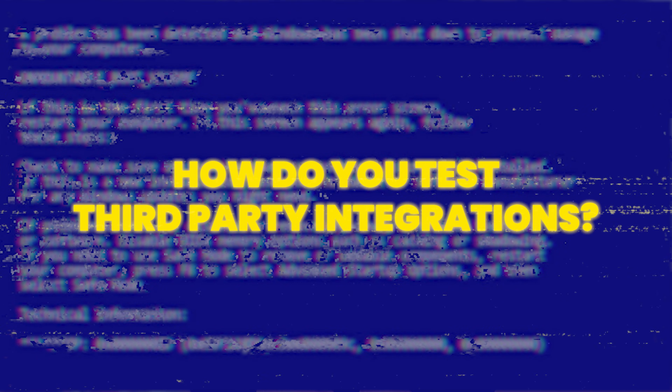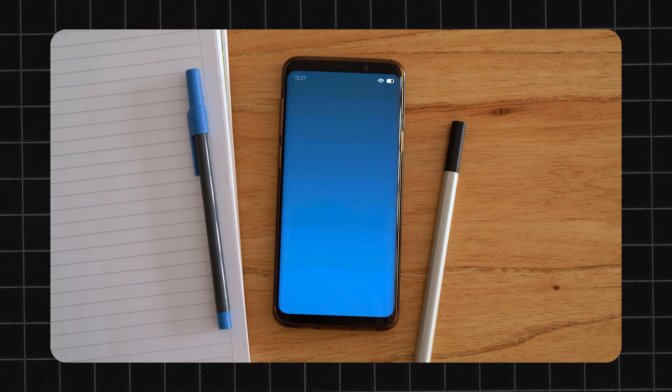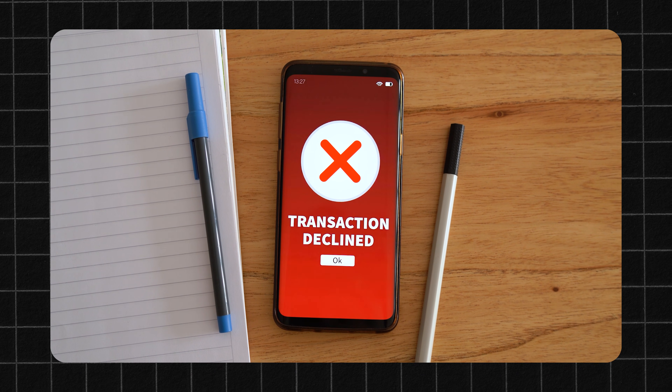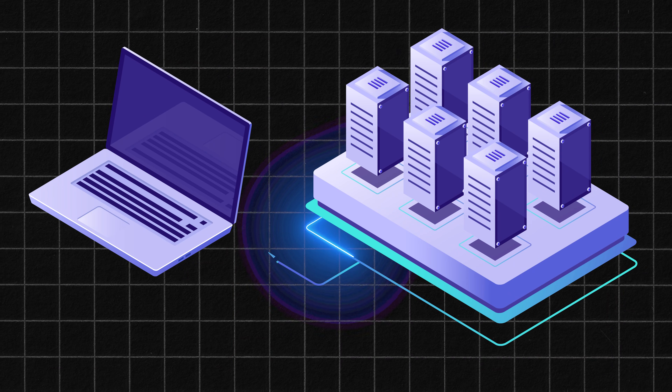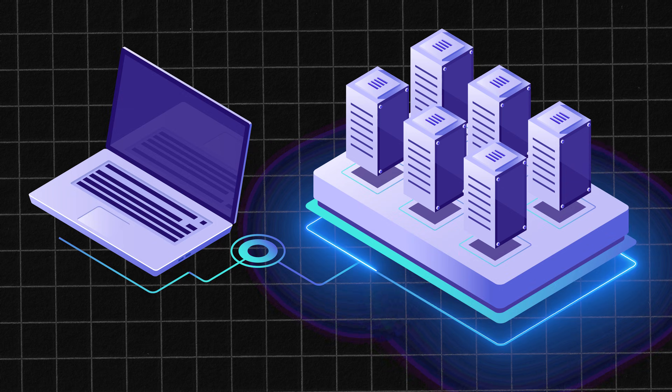This one separates textbook testers from real engineers: how do you test third-party integrations like Stripe or PayPal? For payments, I always use their sandbox. Then I mock or stub a lot, especially for error cases like declined cards or failed webhooks. I also check the database or logs to confirm the payment status really changed — front-end only tests can lie. So I always verify the backend state, and I avoid doing login through the UI; I grab the token with API calls or storage state fixtures.